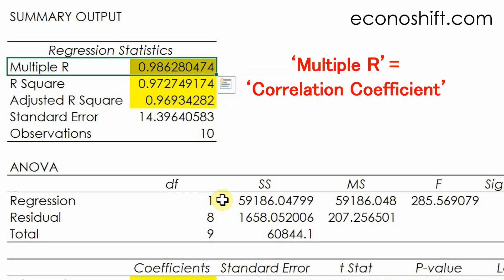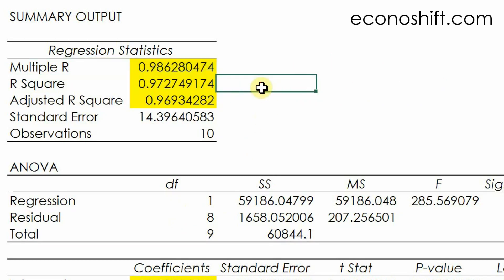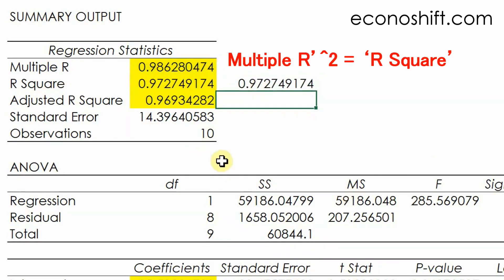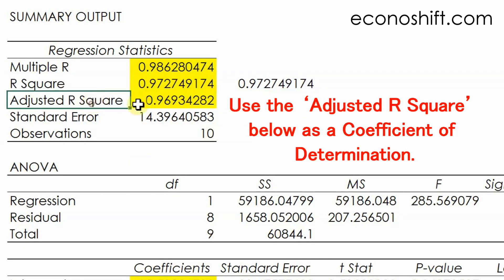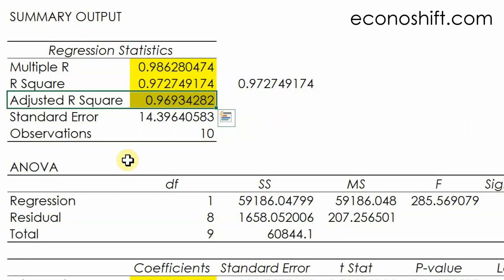Multiple R is the correlation coefficient. You know that squaring it will be the same as the R square. However, I would like you to use the adjusted R square below as a coefficient of determination. It's a little lower than the R square above. What's the difference between the two?